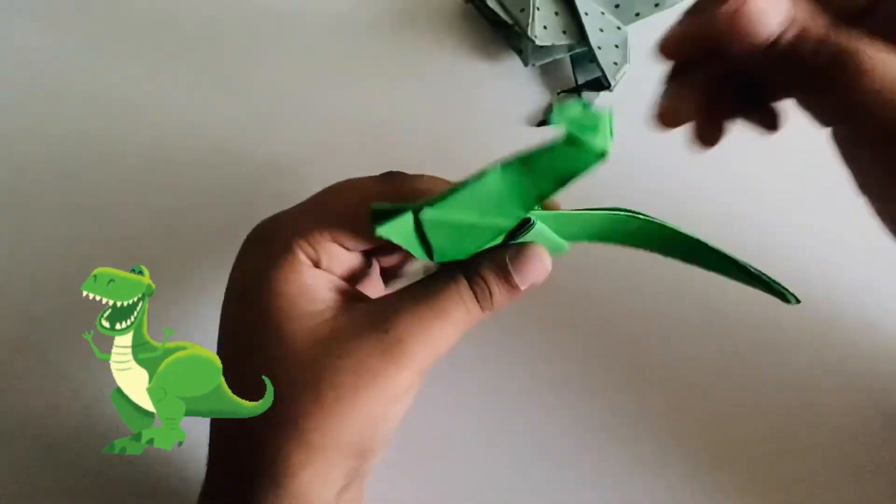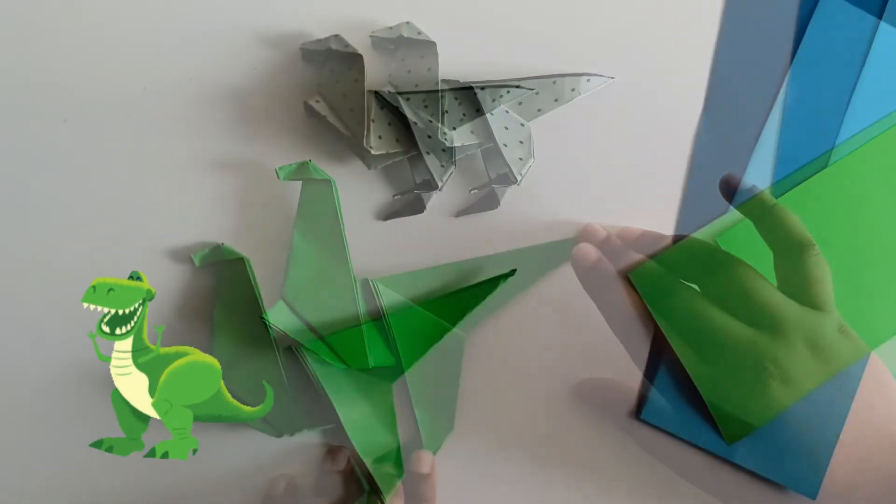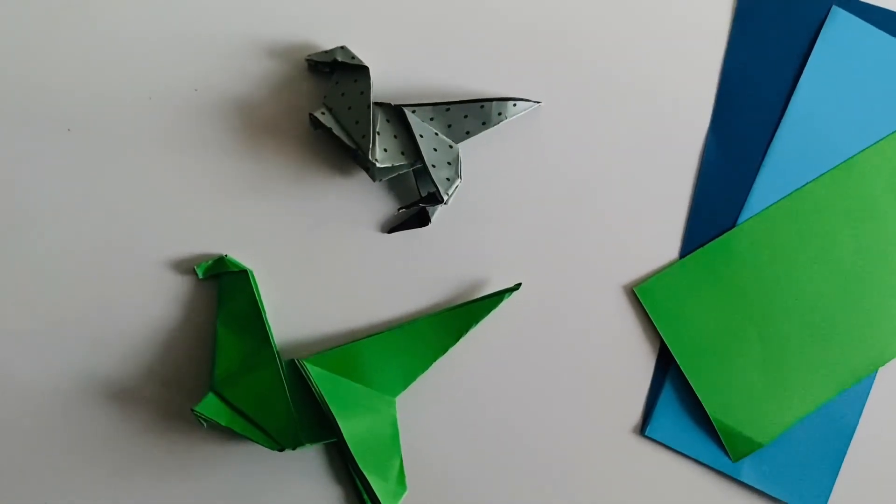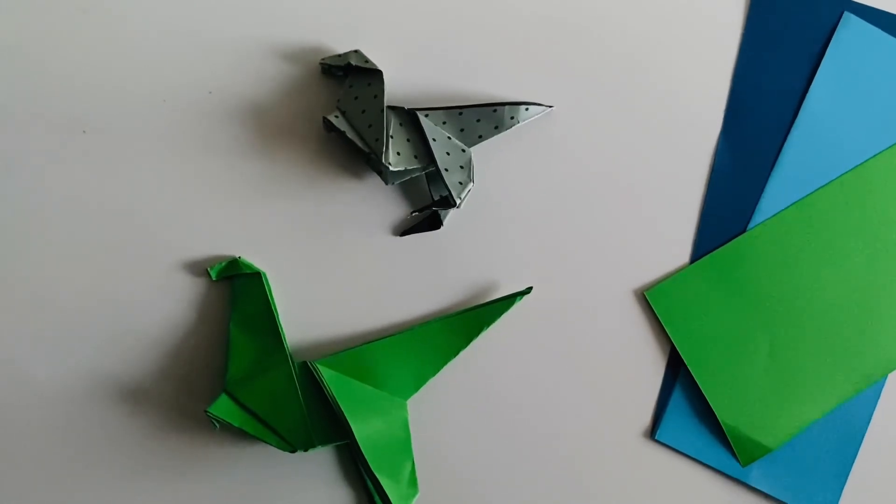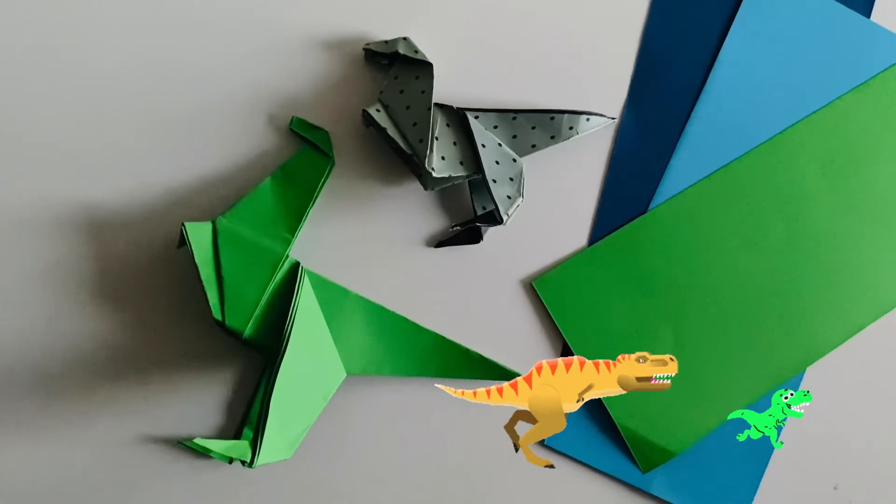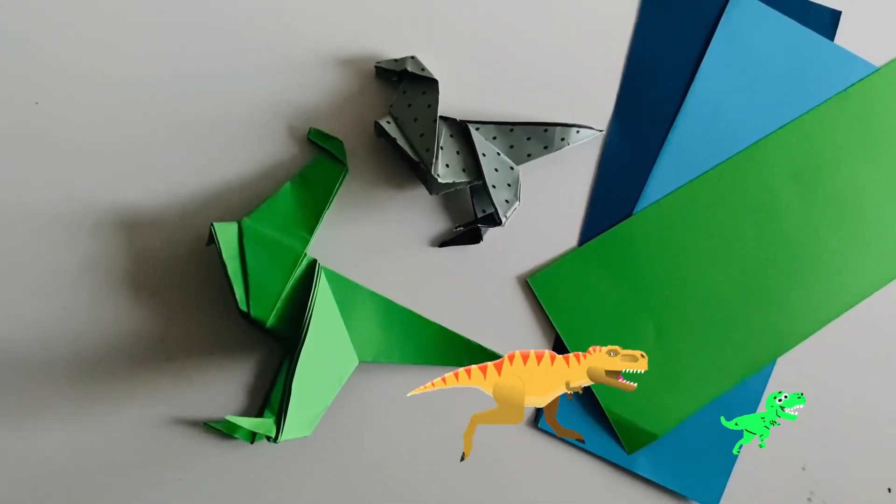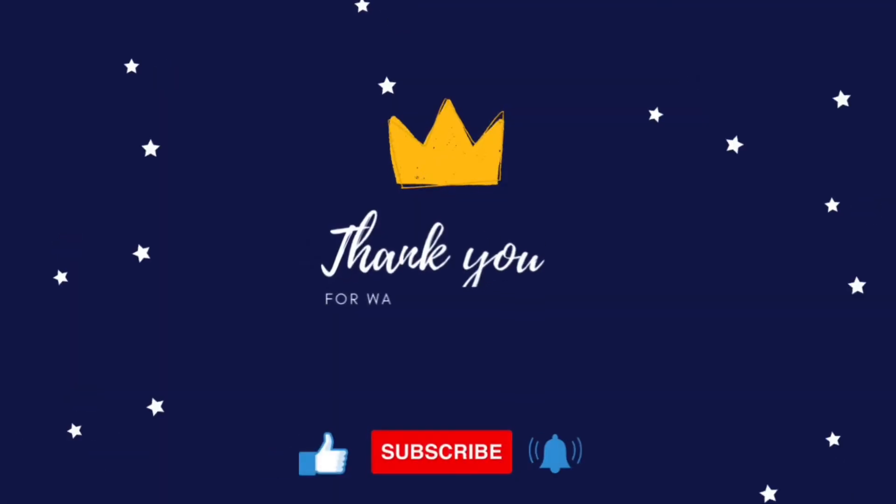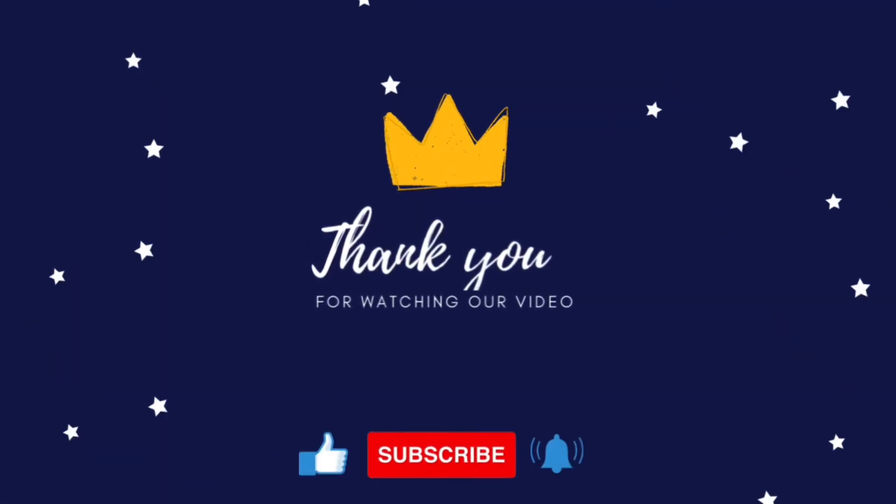And then it should look like this. Now our T-Rex is done. Our next video we are going to be making the Brachiosaurus then the Velociraptor. Thank you for watching our videos, please like share and subscribe to our channel. Until we meet again, bye and have a lovely day. Bye.